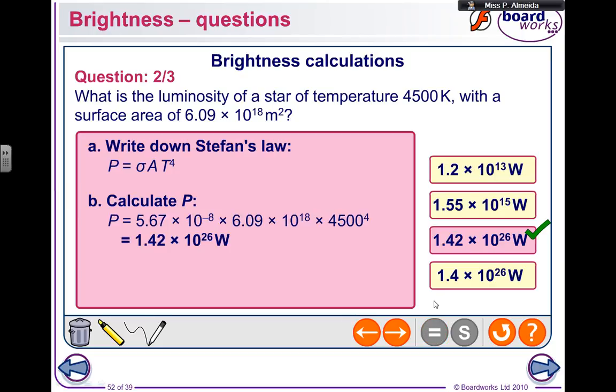So 5.67 times 10 to the power of minus 8 for the Stefan-Boltzmann constant times the area, surface area, 6.09 times 10 to the power of 18 times the temperature to the power of 4, 4,500 to the power of 4. And this would give me 1.42 times 10 to the power of 26 watts.